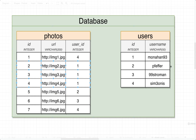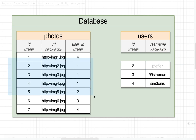So here's the question: what would happen if we deleted the user with ID number 1 — if we just dropped away user Monaghan? We would then have some dangling keys, some dangling references. In other words, these photos are now trying to reference a user that does not exist and never will exist.